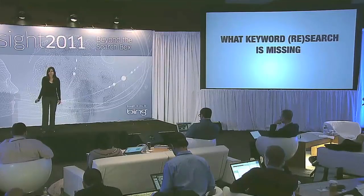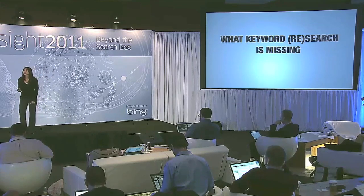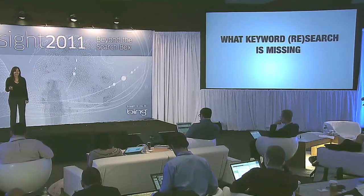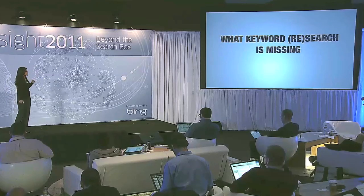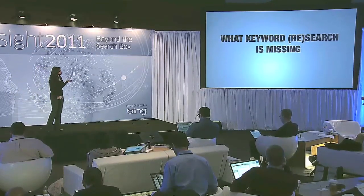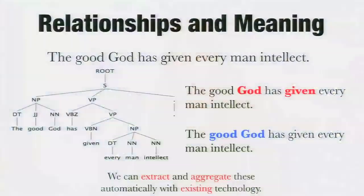Why is there so much reading required? What is keyword search missing here? The answer is that keyword search models text as a mysterious bag of words — it models sentences as mysterious bags of words. Whereas sentences really aren't mysterious bags of words. Sentences follow rules and have grammatical structure, and for many years now it's been possible for computers to look at that grammatical structure and automatically understand it.